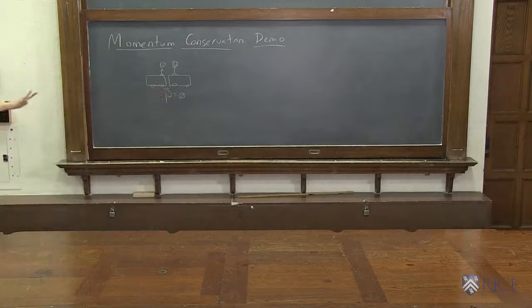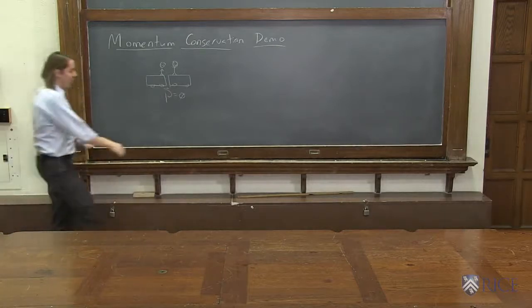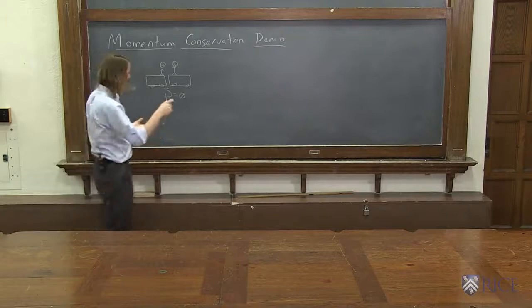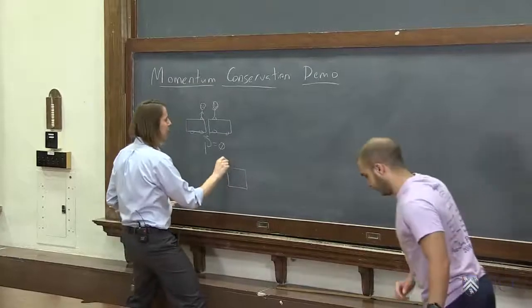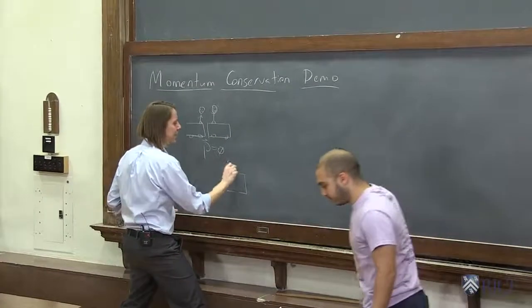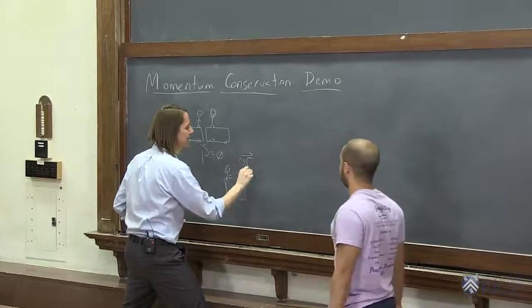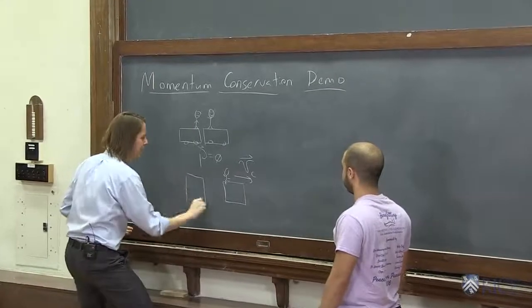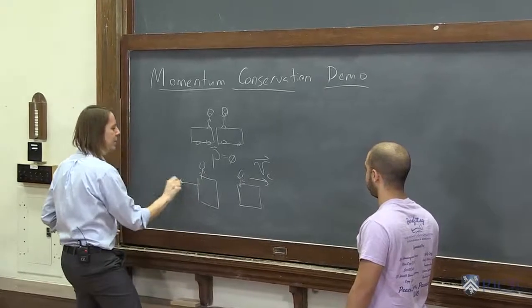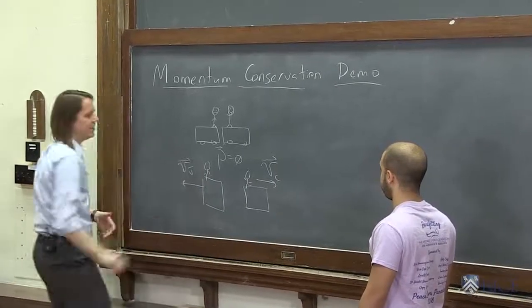All right, so after we pushed, we both started moving. We've got a velocity, so Sina is going this way with what we'll call v Sina, and I am going this way with what we'll call vJ, v for Jason.